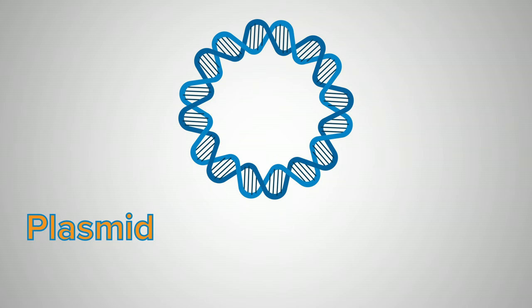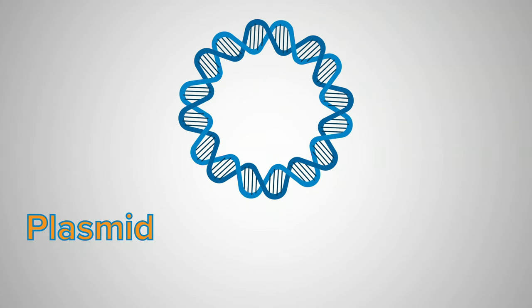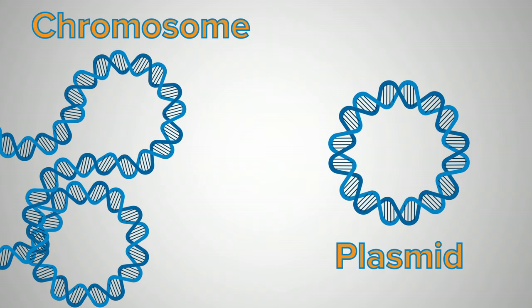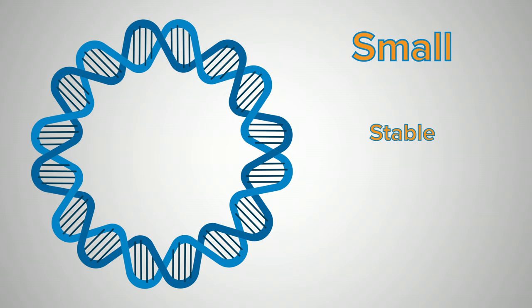At their most basic level, plasmids are small circular pieces of DNA that replicate independently from the host chromosomal DNA. Compared to the millions or billions of bases that make up the entire genome, plasmids typically contain a couple thousand at most. They are relatively small, stable, and easy to manipulate.